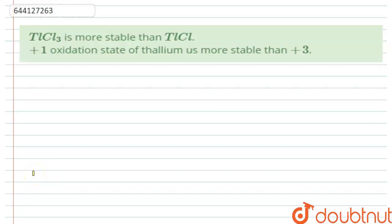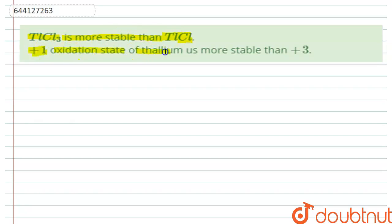Hello students, welcome to Doubtnut. Let us look at the question here. The question says that TlCl3 is more stable than TlCl — that is, thallium trichloride is more stable than thallium chloride — which is the first statement we need to verify. The second statement says that the plus one oxidation state of thallium is more stable than plus three. So we need to verify both these statements.